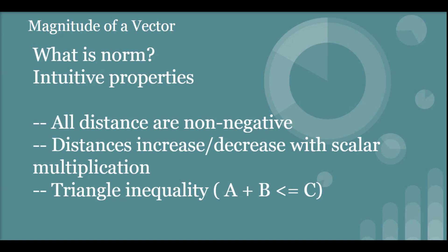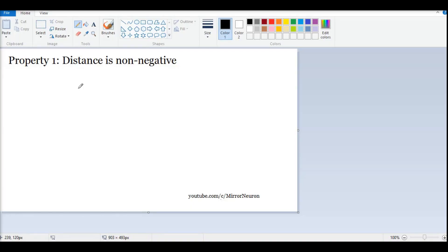So let us see diagrammatically how these three properties look like. Okay, so the first property of our norm, which is a technique to calculate the length of a vector or magnitude of a vector, is that the distance is non-negative. So what does it mean? So suppose I have a vector, right, and if I draw an axis here, okay, and say I have a vector something like this.